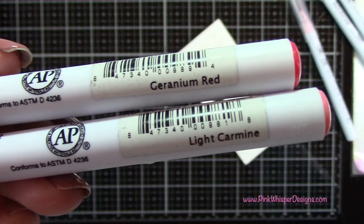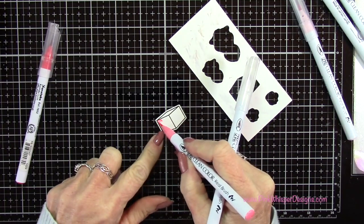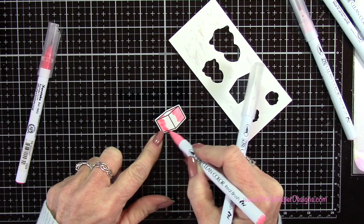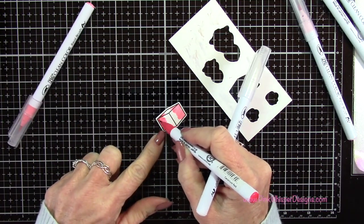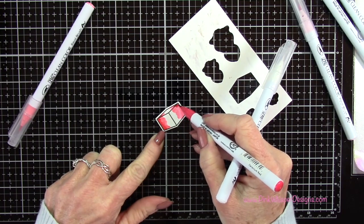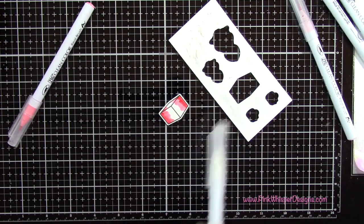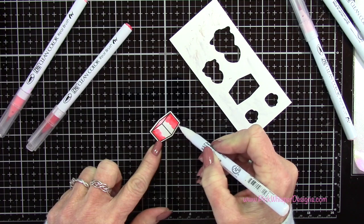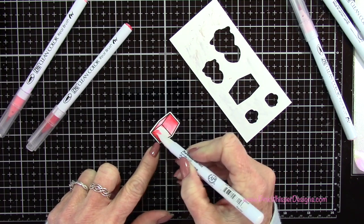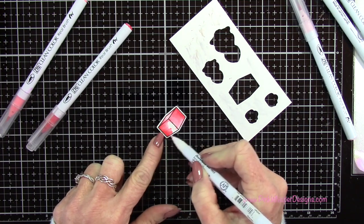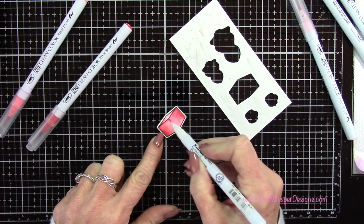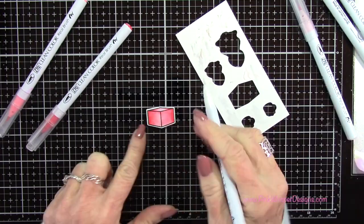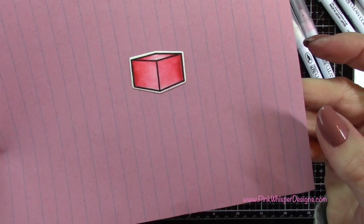You can see that up close. With geranium red and light carmine I'm going to color in this box. This is the bottom of the box, and I'm going to be using this as a little stool or desk chair to sit the bunny on. What I'm doing here is trying to keep this center the lightest, so I'm putting the colors around the edges and pulling in towards the center. That will give it a little bit more of a three dimensional look.